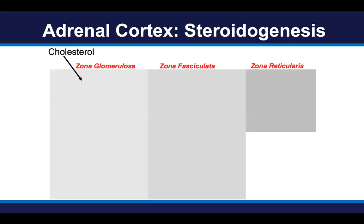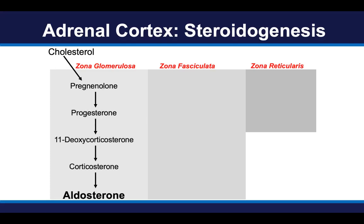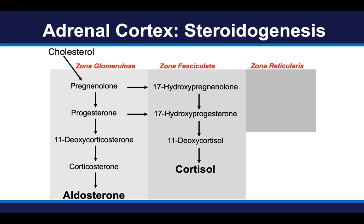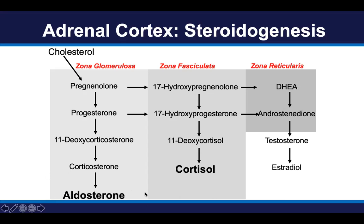Let's talk about what adrenocortical steroid hormones are. Here's a cartoon of the adrenal cortex. The adrenal cortex is a factory that produces adrenocortical steroids. It uses cholesterol as the substrate, and using this substrate, the zona glomerulosa can produce the adrenocortical hormone aldosterone. The zona fasciculata expresses the enzymatic machinery to produce cortisol, and the zona reticularis can produce adrenal androgens. For the purpose of this video series, we will largely focus our attention on the two dominant and most important hormones — aldosterone and cortisol.